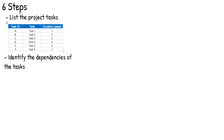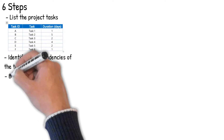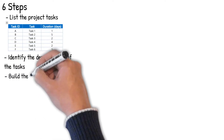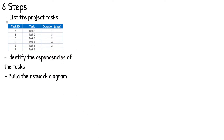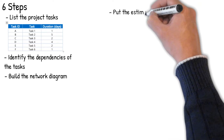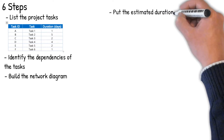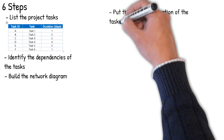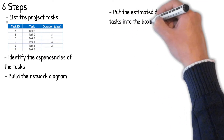Once you have this information, it's possible to start building a network diagram. Within a network diagram, each task is put into its own box or circle, and arrows between them are used to depict dependencies.